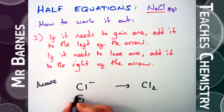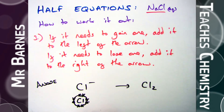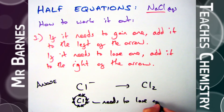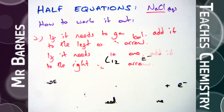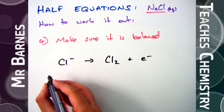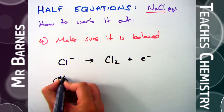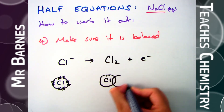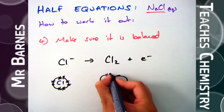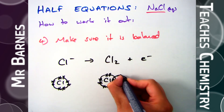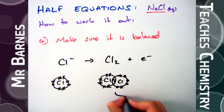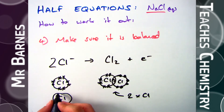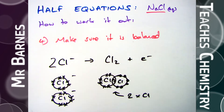At the anode, chlorine is in group seven, so it's a minus. To get a full shell it gained one electron to have eight, so it needs to lose one to get back to the chlorine atom — therefore put the electron on the right-hand side of the arrow. The final step is to make sure it's balanced. Looking at Cl⁻ → Cl₂ + e⁻: I've got two chlorines on the right, so I need two chlorine ions on the left. If I have two ions, both need to lose an electron, so I need two electrons on the right. The balanced equation is: 2Cl⁻ → Cl₂ + 2e⁻.